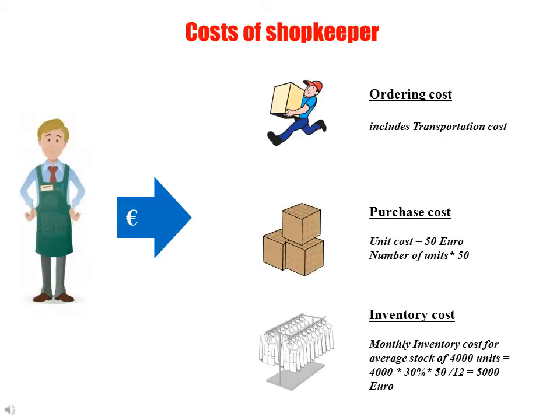There are different kinds of costs associated with the shop. First is the ordering cost — the cost associated with placing an order for goods, which also includes transportation cost. The second cost is purchase cost, that is the cost of purchasing goods from the shipper. Since the purchase cost of a single unit is 50 euro, the total purchase cost will be the number of units purchased multiplied by 50.